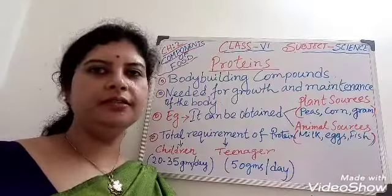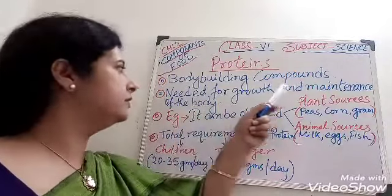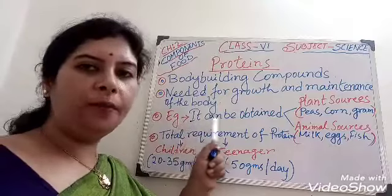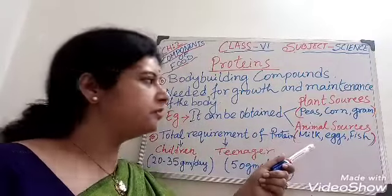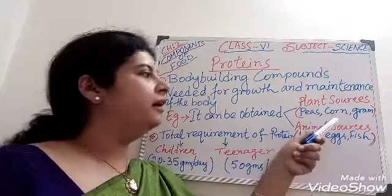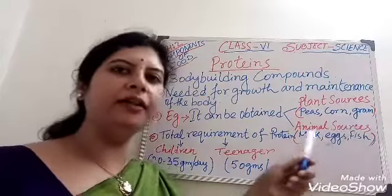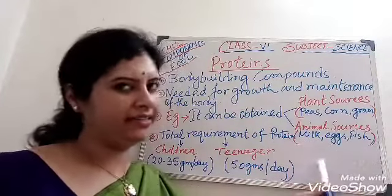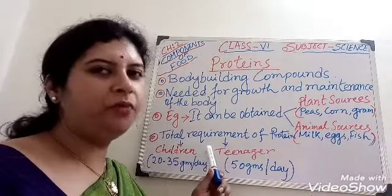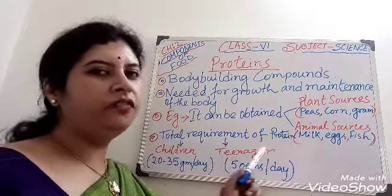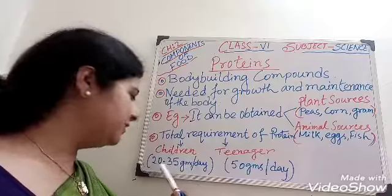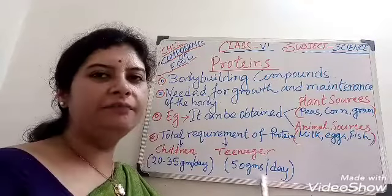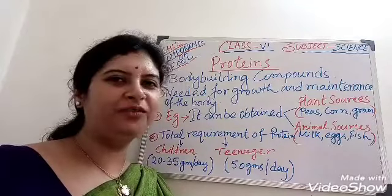Proteins are body-building compounds needed for growth and maintenance of the body. Proteins can be obtained from plant sources such as pea, corn, and gram, as well as animal sources like milk, egg, and fish. The total protein requirement for children is 20 to 35 grams per day, and for teenagers, 50 grams per day. So take an adequate amount of protein every day.